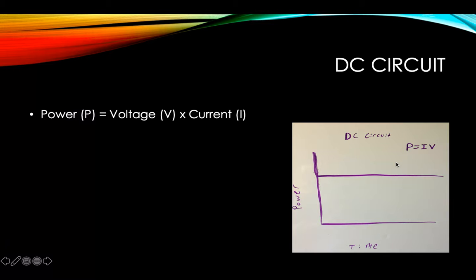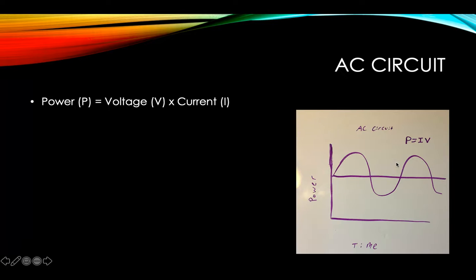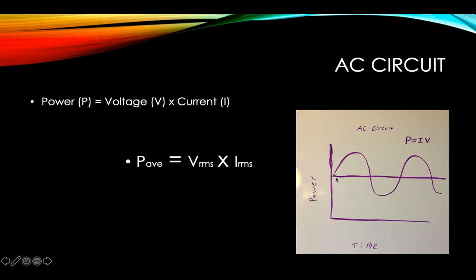However, in an alternating circuit, the power is equal to voltage times current — that still applies. However, the current and the voltage are changing over the course of time, which means the power fluctuates; it doesn't remain constant like it would in a DC circuit.